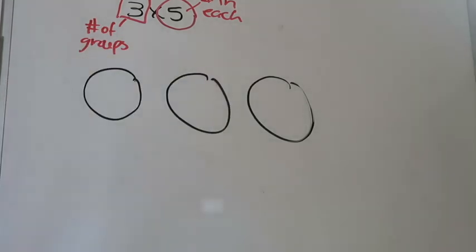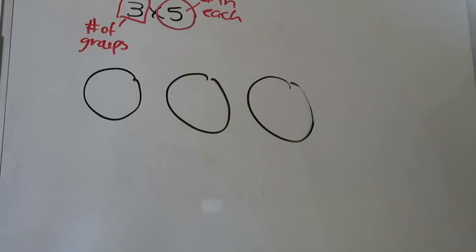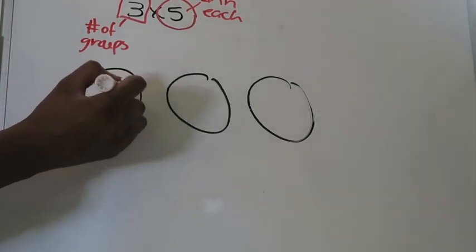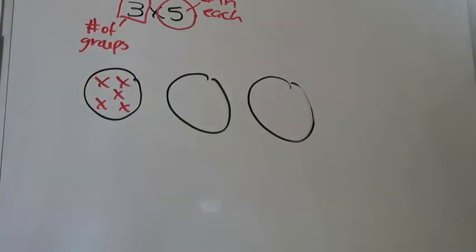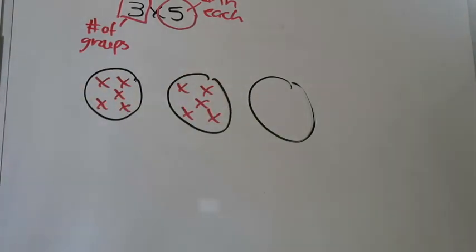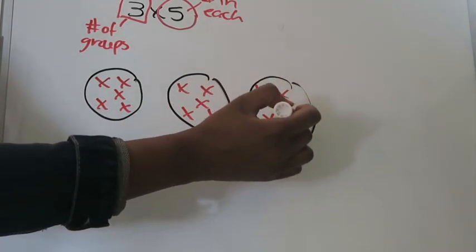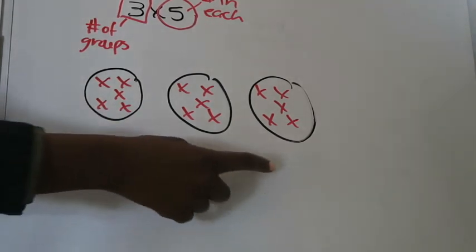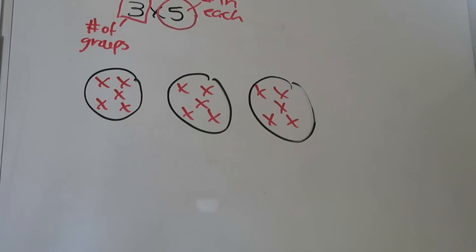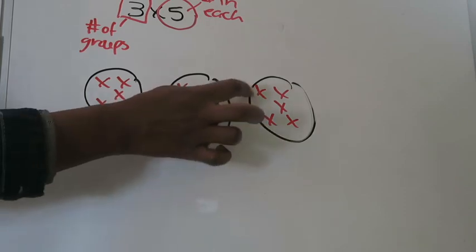Here are my 3 equal groups already drawn out. Now I need to put 5 marks in each group. I'll take care of one group at a time: group 1 gets 1, 2, 3, 4, 5 — first group done. Group 2 gets 1, 2, 3, 4, 5 — second group done. And group 3 gets 1, 2, 3, 4, 5 — done. So I've made 3 groups and in each group I've put 5 counters.